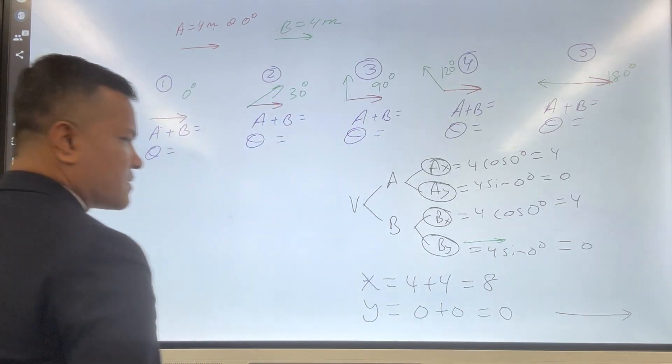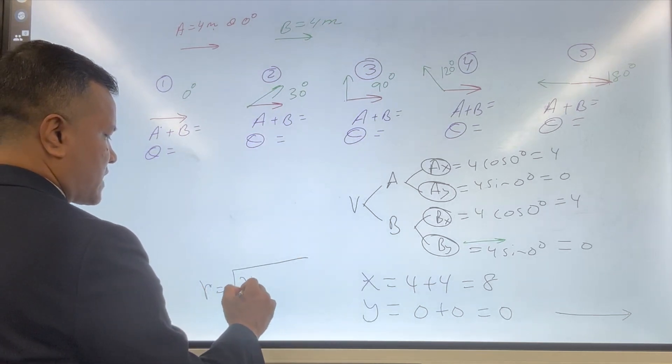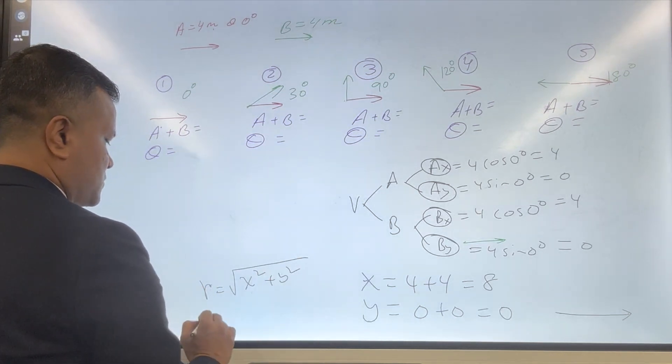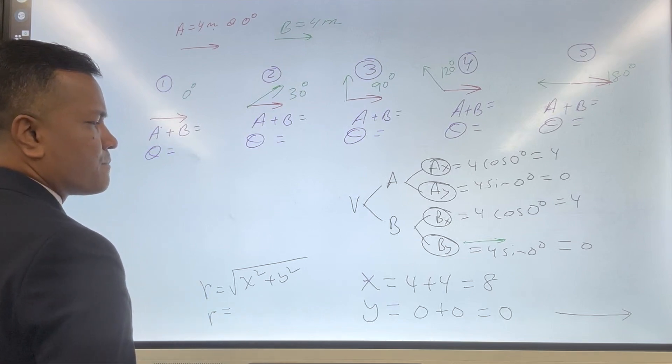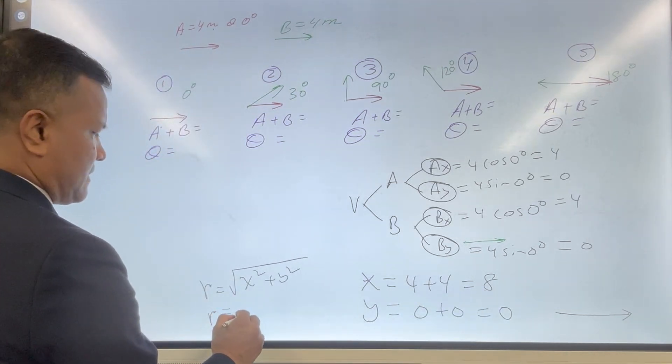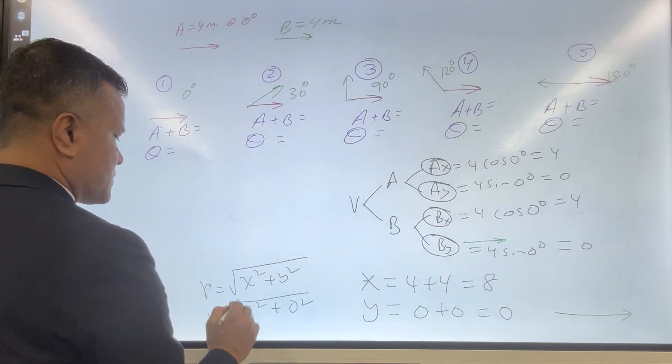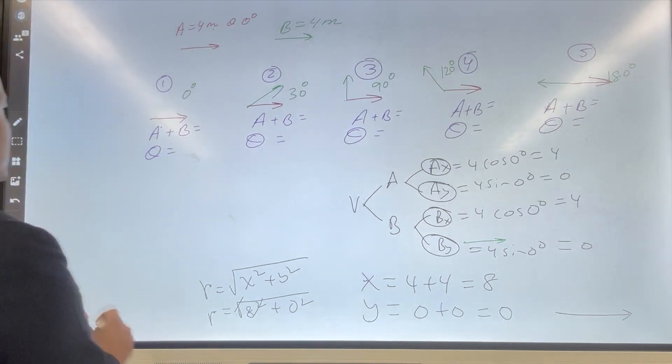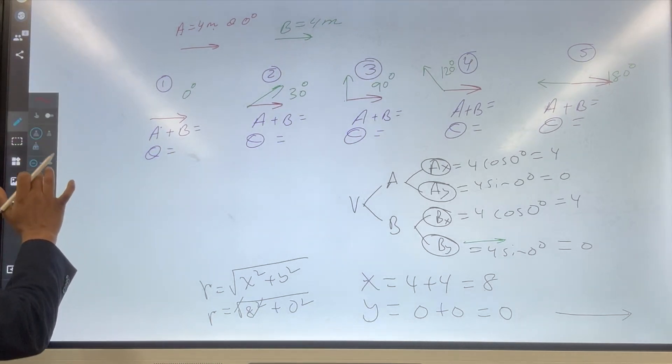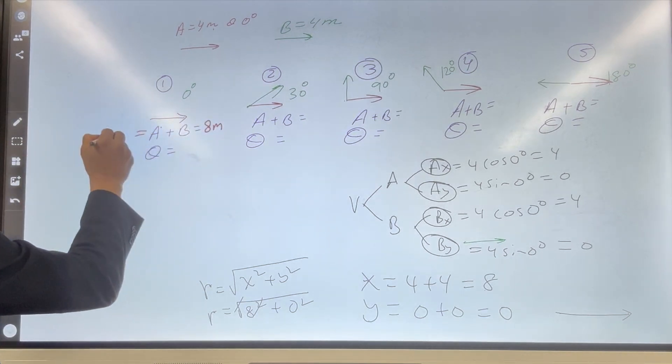What is the angle of the y vector? There is nothing so we cannot draw that. Okay, so what is the size of the angle? We have x and y so we can find the size. To find the size we're going to use x square plus y square, so we're going to use 8 square plus 0 square, so the result is 8. So you're going to now come over here and we're going to write 8. This is the resultant: 8 meter. And never forget to write the result of it.